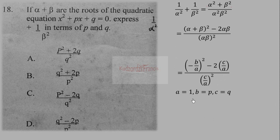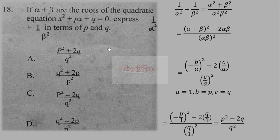With a = 1, b = p, and c = q, we substitute to get (p² − 2q) / q². So the correct answer is option C.